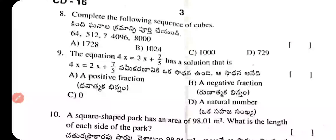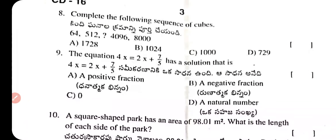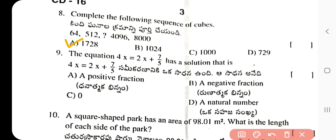Question 8: Complete the following sequence of cubes — 64, 512, ___, 4096, 8000. The correct answer is 1728.